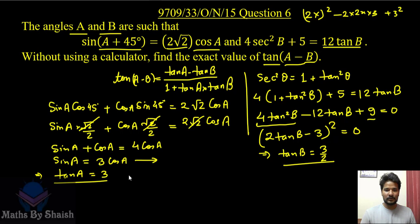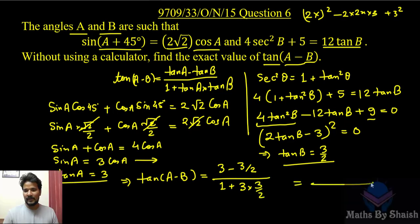Now we will replace it in this, substitute this value and we will get tan(A - B) is tan A, that is 3, minus tan B, that is 3/2, over 1 plus tan A, 3, multiplied by tan B, 3/2. So if you will simplify, it is 3 minus 3/2 is 3/2, and 3 times 3/2 is 9/2, here 1 is 2, 9 plus 2 is 11/2. 2 and 2 got cancelled, and finally we got this value as 3/11 without using calculator.